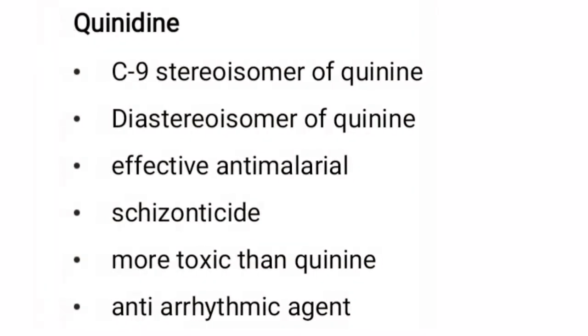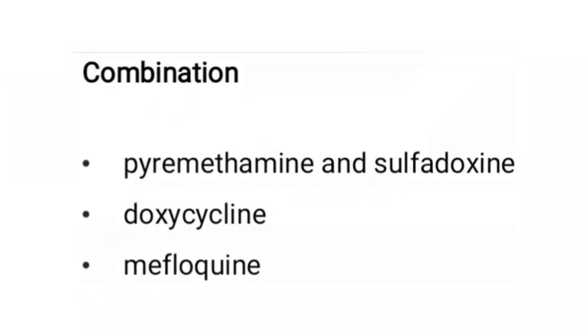Quinidine is a C9 stereoisomer of quinine and also a diastereoisomer. It is an effective anti-malarial used as a schizonticide, but it is more toxic than quinine. Its major use is as an anti-arrhythmic agent. Quinine is used in combination with pyrimethamine and sulfadoxine, or with doxycycline, or with mefloquine.